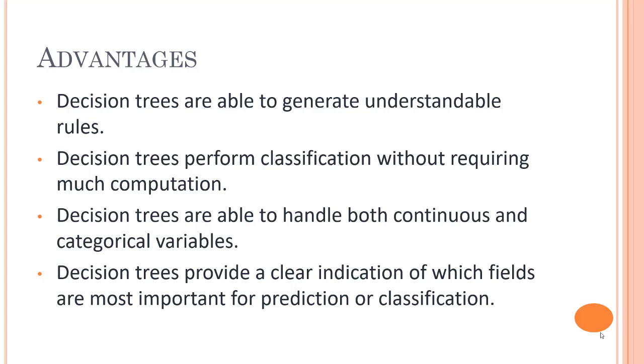Decision trees can automatically handle missing values. They are also robust to outliers and can handle them very efficiently. Moreover, they require very less training time. The training period is very less compared to random forests.